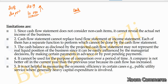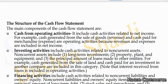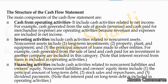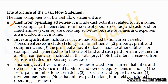Now let me talk about the 3 activities into which we divide cash flow statements. The first activity is operating activity, the second is investing activity, and the third is financing activity. We will cover each of these three activities one by one.